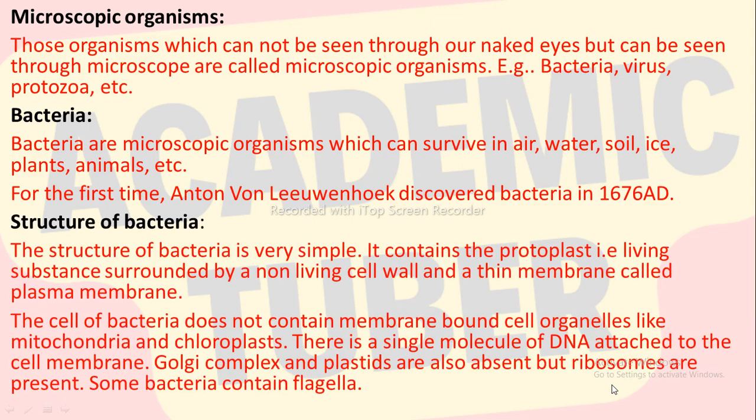Structure of Bacteria. The structure of bacteria is very simple. It contains the protoplast, which is a living substance surrounded by a non-living cell wall and a thin membrane called plasma membrane. The cell of bacteria does not contain membrane-bound cell organelles like mitochondria and chloroplasts. There is a single molecule of DNA attached to the cell membrane. Golgi complex and plastids are also absent but ribosomes are present.